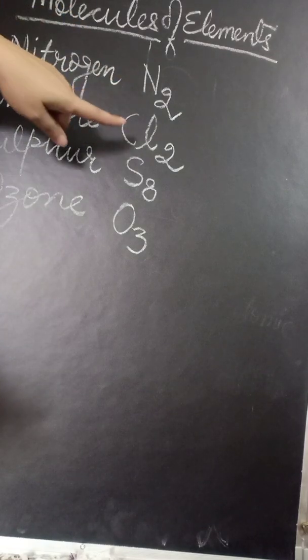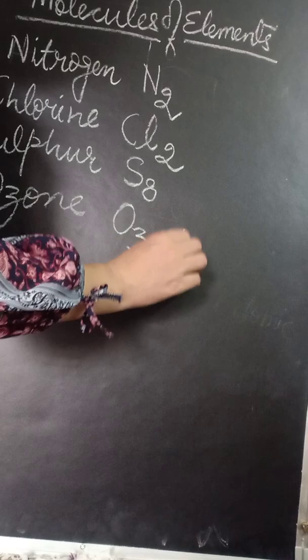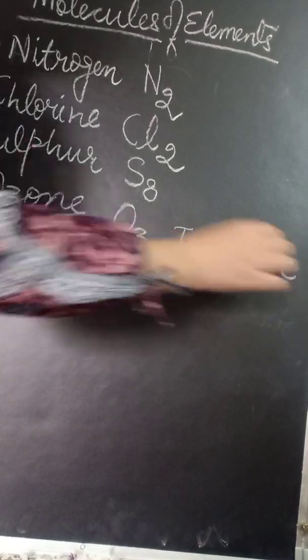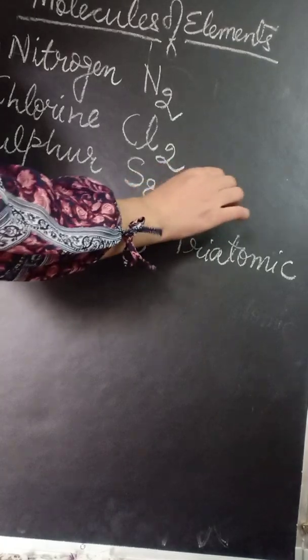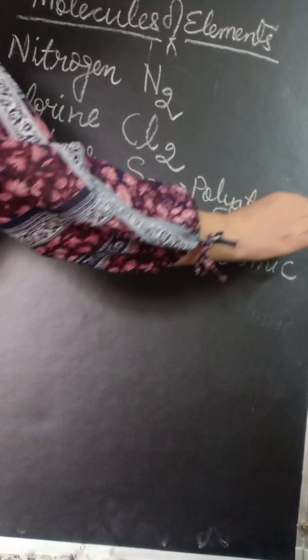So the formula for nitrogen gas is N2, for chlorine it is Cl2, for sulfur it is S8, and ozone it is O3. This can be called triatomic molecule and this is polyatomic because you have more than 3.